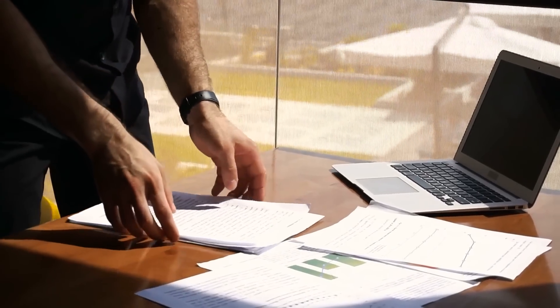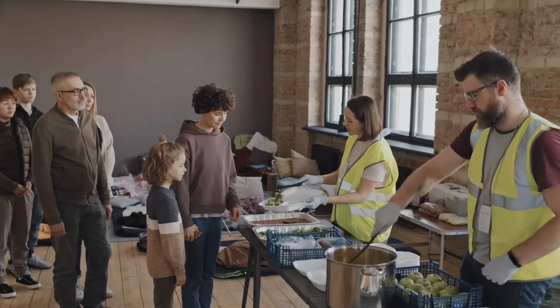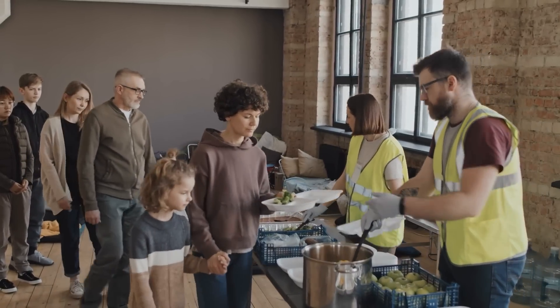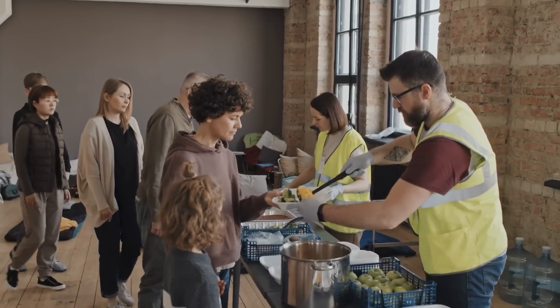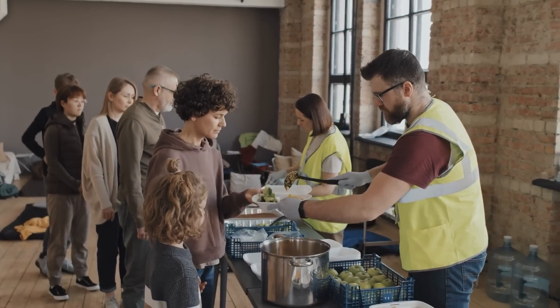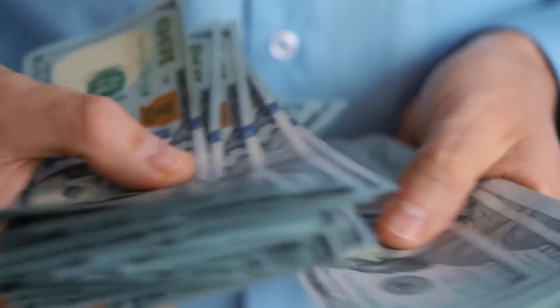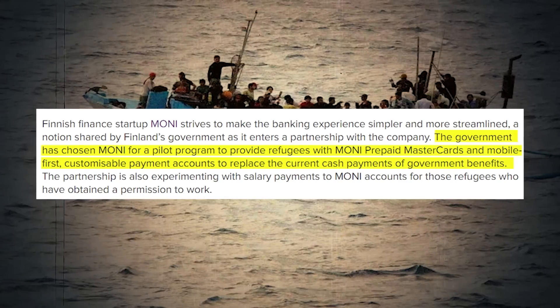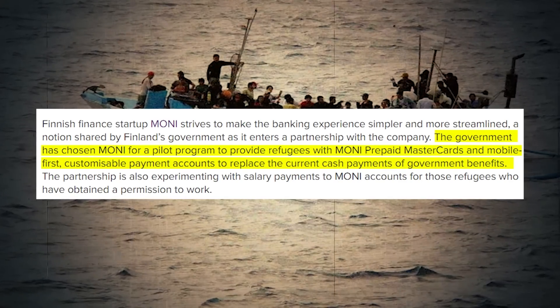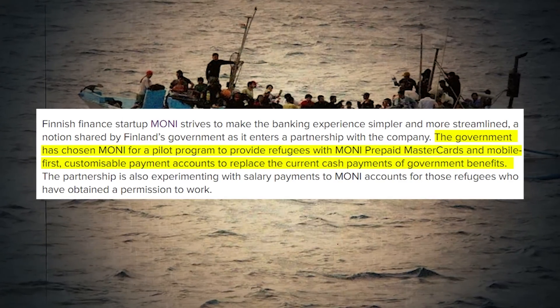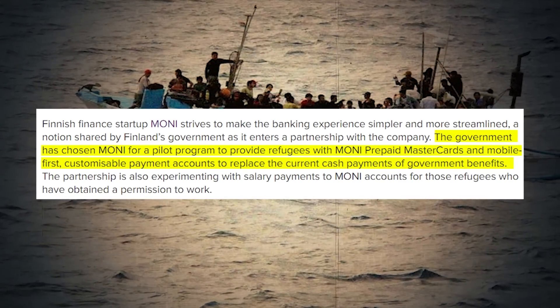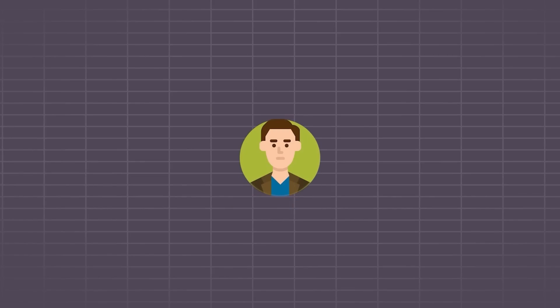But in Finland, they have done such an amazing job with refugee settlement that refugees in this country are happier than citizens of most countries. In Finland, instead of traditional cash disbursements, the Finnish Immigration Service partnered with a local startup called Moni and handed out prepaid MasterCards to these refugees. This MasterCard was specifically designed for asylum seekers who do not have a bank account.